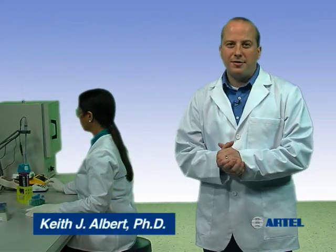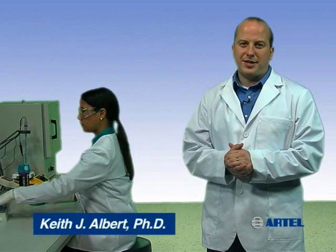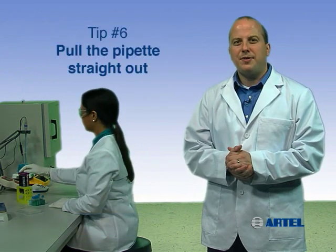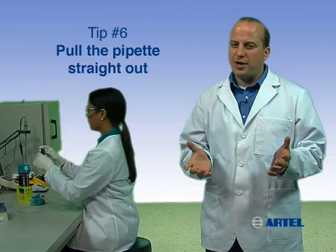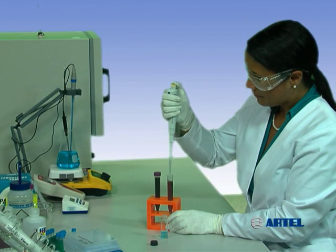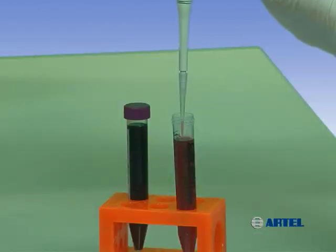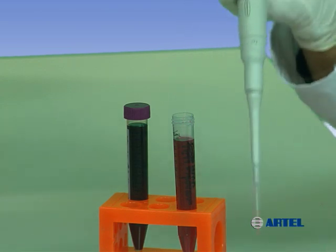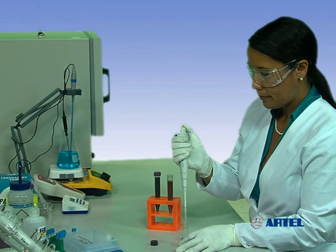Help ensure liquid handling quality in your lab by using proper pipetting technique. Pipetting tip number six: Pull the pipette straight out of the container after aspirating sample. In other words, make sure not to touch the tip on the side of the container as it's being removed.